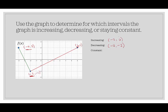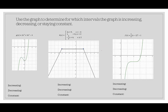This graph doesn't have any constant parts, so we can leave that blank. If you're writing this yourself, you just wouldn't include constant. It would just be increasing and decreasing. I always suggest pausing the video to see how you do on the next examples.